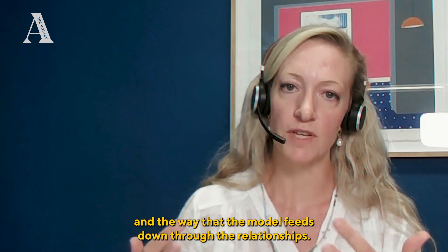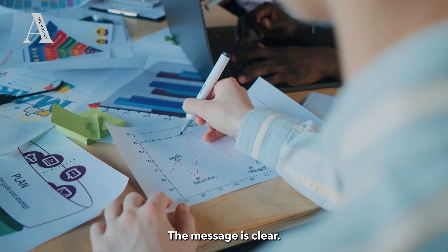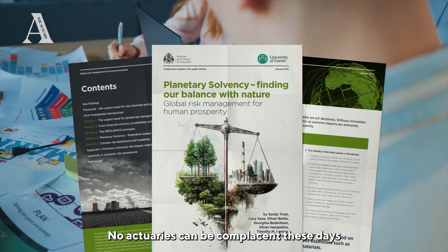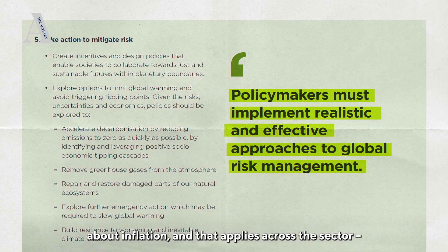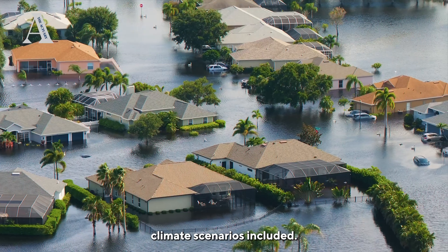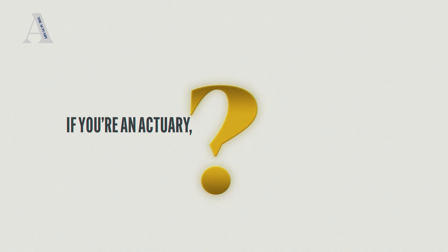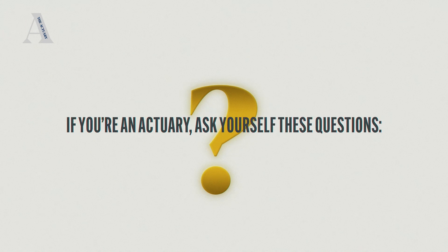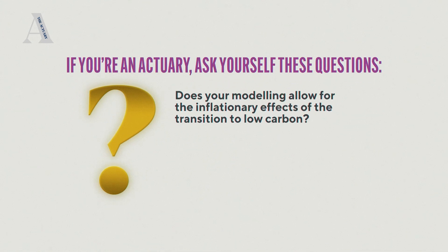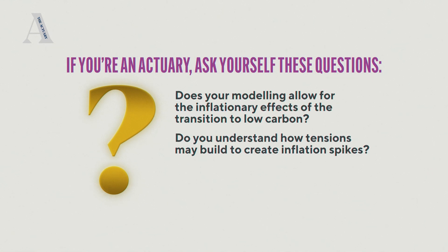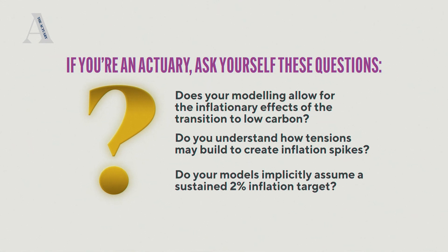The other thing is we could do a reverse stress test in the way that the model feeds down through the relationships. The message is clear: no actuaries can be complacent these days about inflation, and that applies across the sector — climate scenarios included. If you're an actuary, ask yourself these questions: does your modelling allow for the inflationary effects of the transition to low carbon? Do you understand how tensions may build to create inflation spikes? Do your models implicitly assume a sustained two percent inflation target?